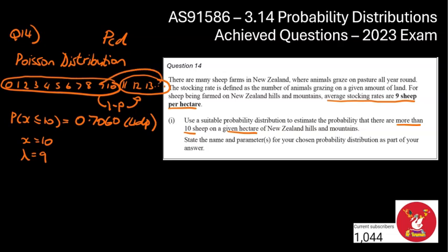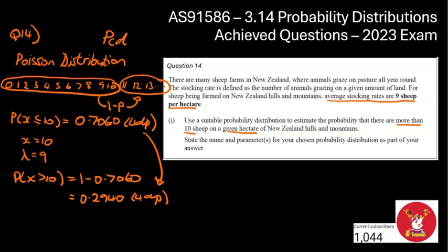I can now do the 1 minus part to then get the big probability. So the probability that X is more than 10 is going to be equal to 1 minus that probability, 0.7060, and that's going to give me 0.2940. And again, that was a 4DP rounding carrying on from above. So hopefully that question made sense. Bit of a, you know, a lot of working for an achieved mark, but I don't think there were anything particularly messy or complicated in that one. A pretty standard Poisson distribution question.